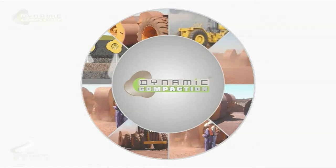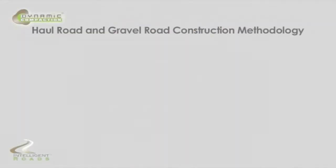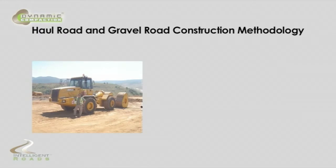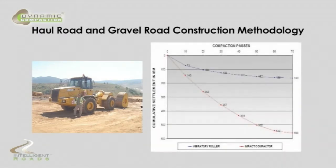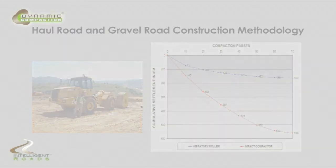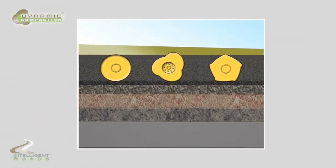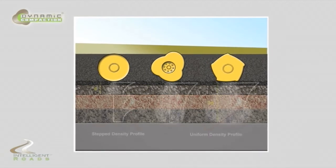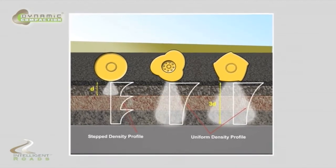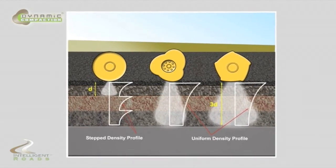Dynamic compaction hall road and gravel road construction methodology: in-situ deep layer compaction. This graph compares the depth of influence that can be achieved with an impact compactor versus a heavy vibro roller on collapsing sand. The extent to which one can achieve settlement of the ground surface determines the extent to which one can improve the soil strength and increase the subgrade stiffness.